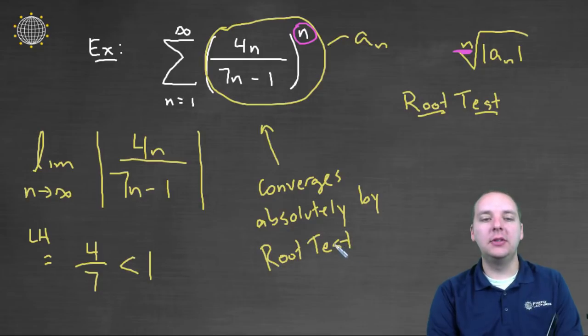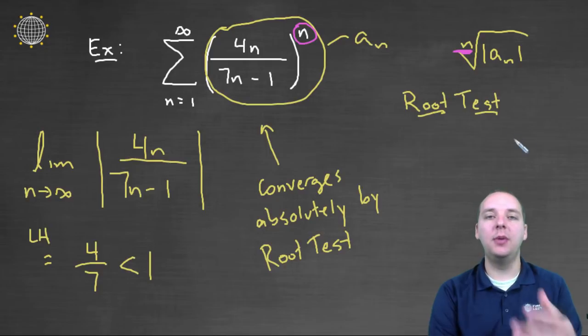Now if this limit had been greater than 1, the root test would have said that the series diverged. And if the limit rather was equal to 1, then the root test would not have been applicable, and you would have needed to go try a different test. But here since the limit was less than 1, then we can say that it converges absolutely by the root test.